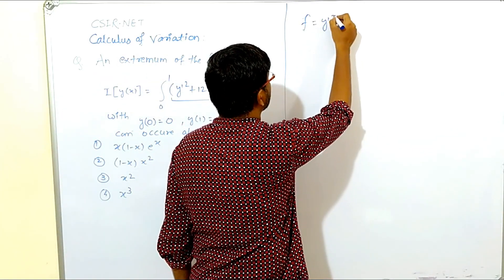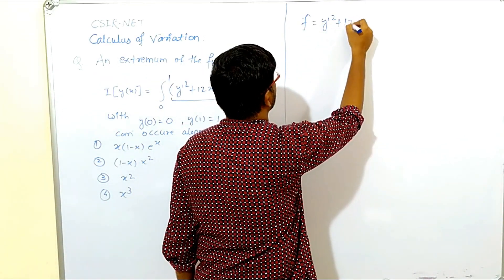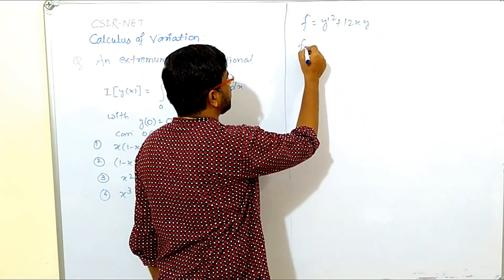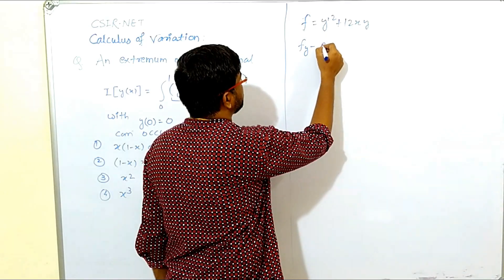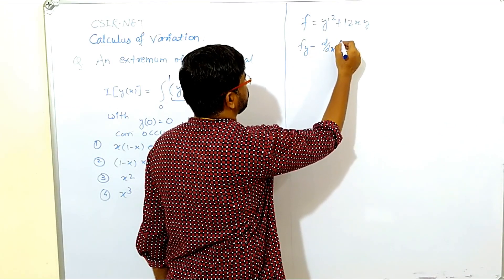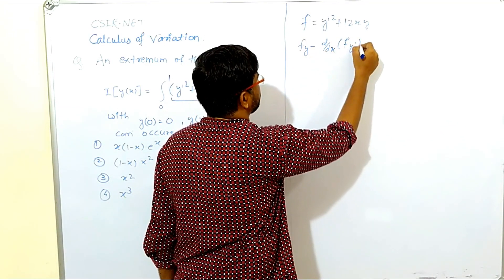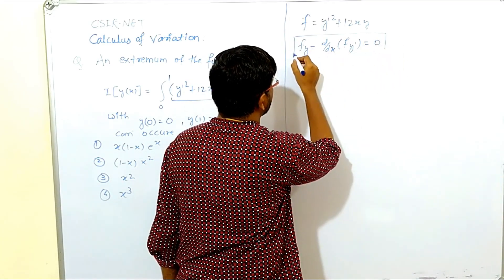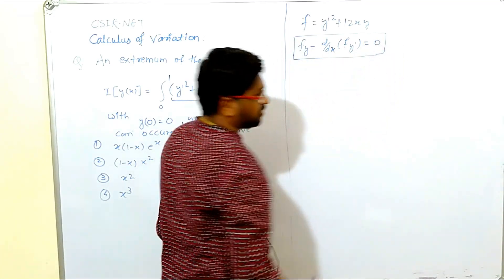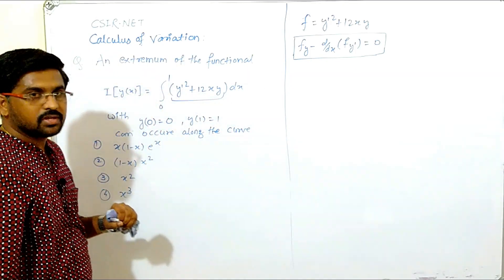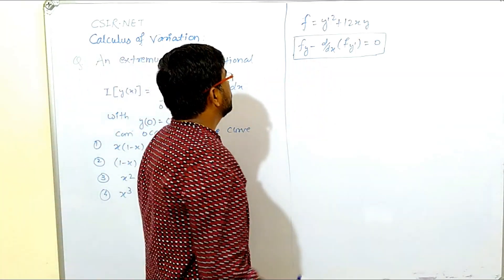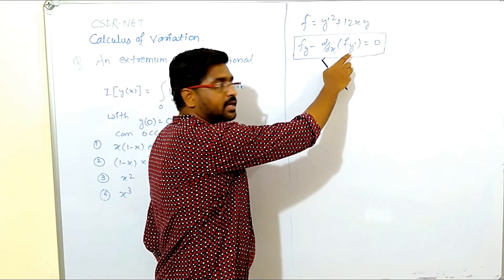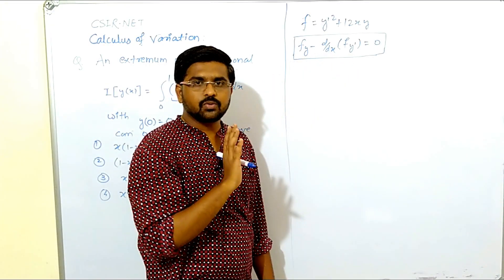Here, f is the integrand, which is a function of x, y, and y'. So f equals y' squared plus 12xy. The Euler equation is: f_y minus d/dx of f_{y'} equals 0. This is a partial derivative with respect to y, partial derivative with respect to y', and an ordinary derivative with respect to x.